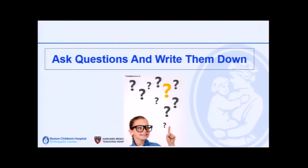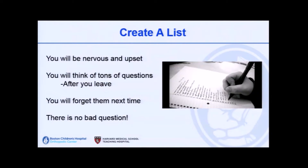The only thing you need to do is ask questions. This is your body and your diagnosis — you need to understand it. The key is to write your questions down, because when we tell you that you have scoliosis, you're going to be nervous and upset. You'll think of tons of questions, but not until after you've left. Write them down on a piece of paper. The best questions I ever get are written down, and there is no bad question. Most of the best questions actually come from the kids themselves.